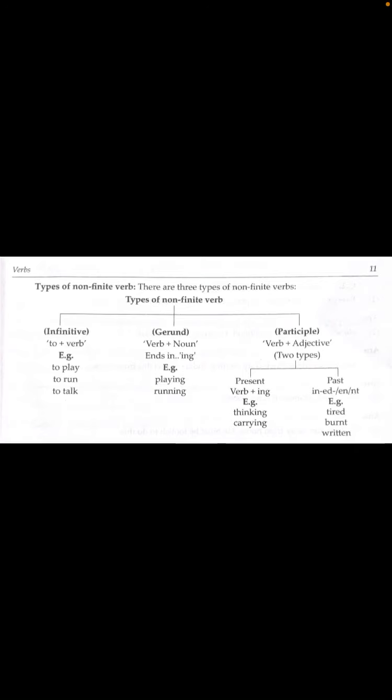Second is gerund: verb + noun ending in '-ing.' If the '-ing' form of a verb is used before a noun, then it is a gerund. For example: playing, running, singing. 'Play' is the basic word; add 'ing' and it becomes 'playing.' If these words are used before a noun, then it is a gerund.